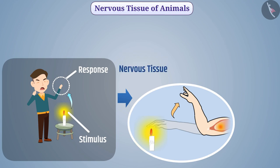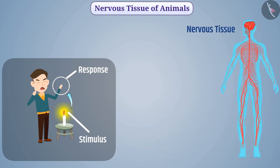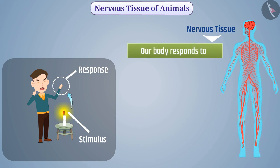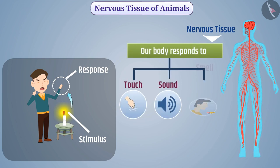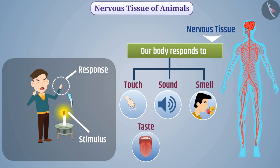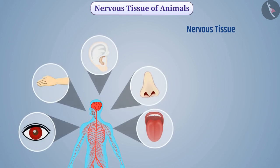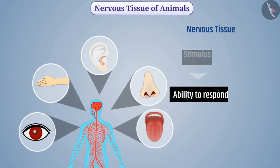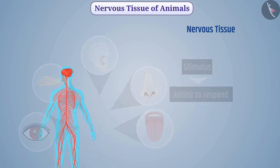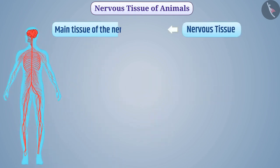This work is performed with the help of nervous tissue. The nervous tissue present in our body responds to touch, sound, smell, taste, and vision. Therefore all cells of the body have the ability to respond to stimulus.